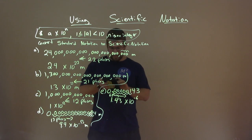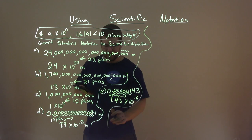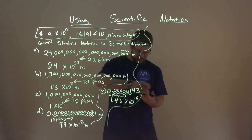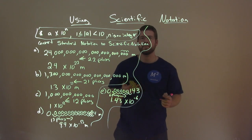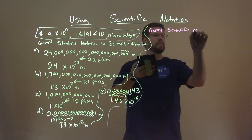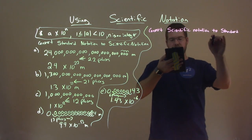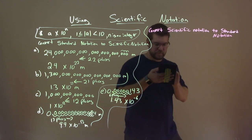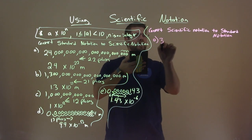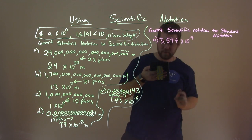But let's learn to convert some things to standard notation. This half I'm going to do with a different color. Let's convert from scientific notation to standard notation. We'll start with A: 3.547 times 10 to the 14th power.